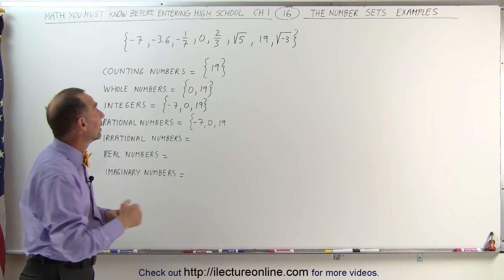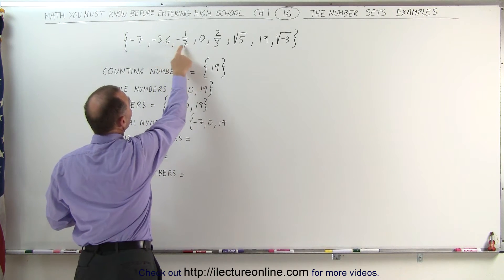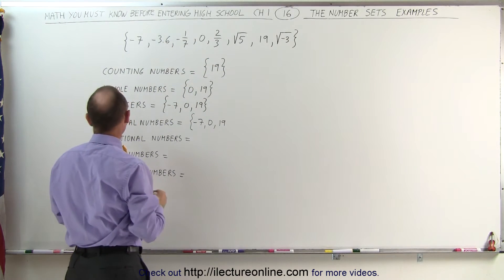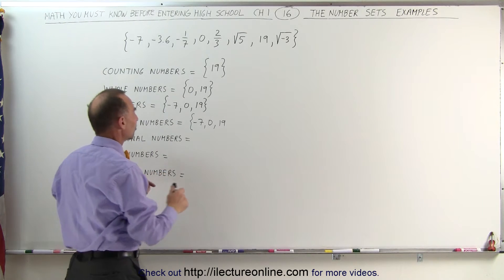Decimals like this, which are terminating, and fractions, even with negative signs, are also rational numbers. We're not at the irrational numbers yet. They're rational numbers.